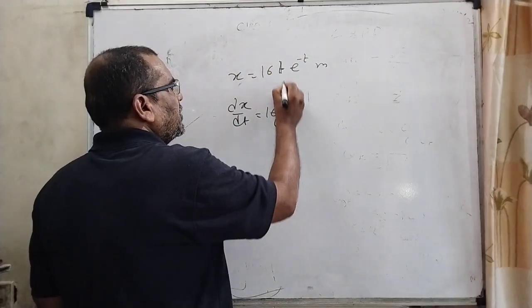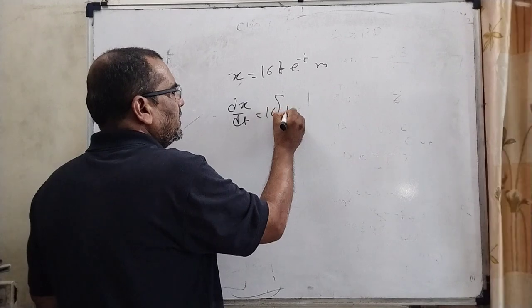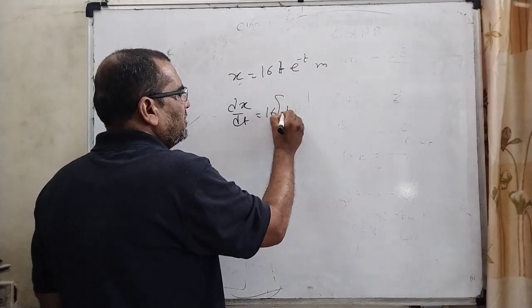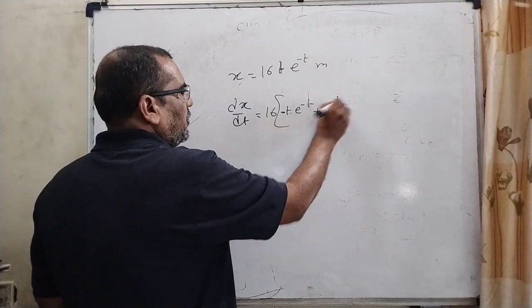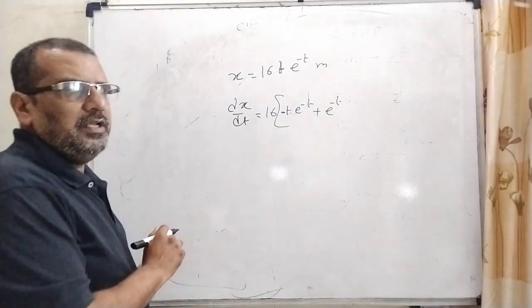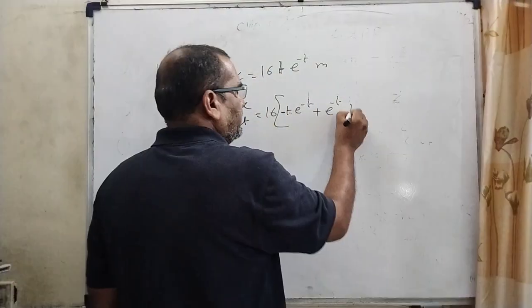Here product of two functions. First function as it is: e^(-t) means -e^(-t), plus e^(-t) as it is and differentiation of t with respect to t, that is 1.